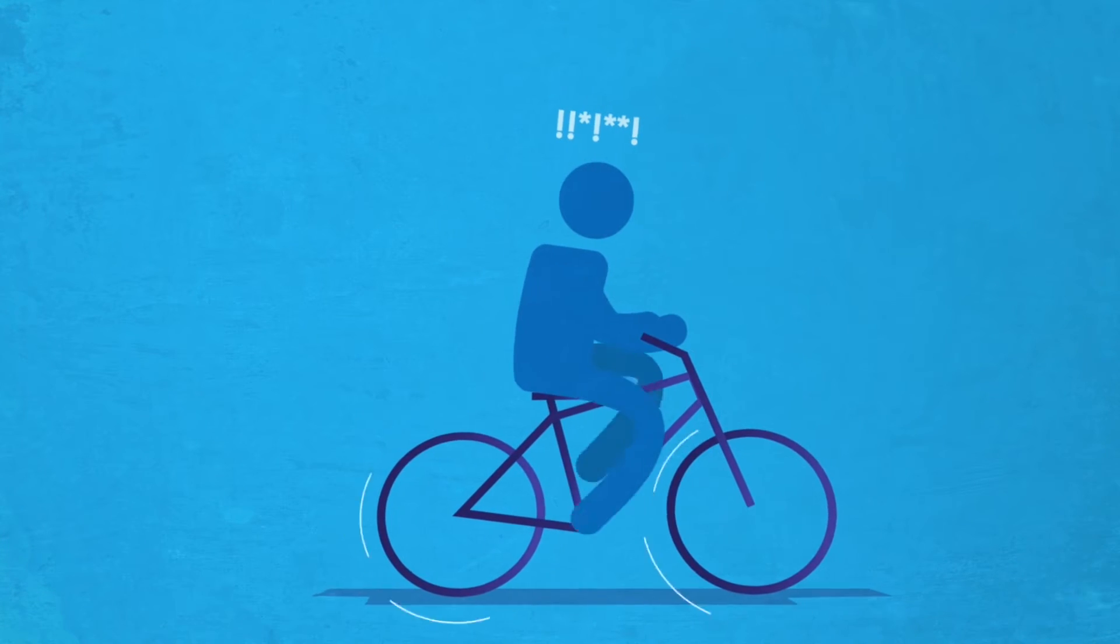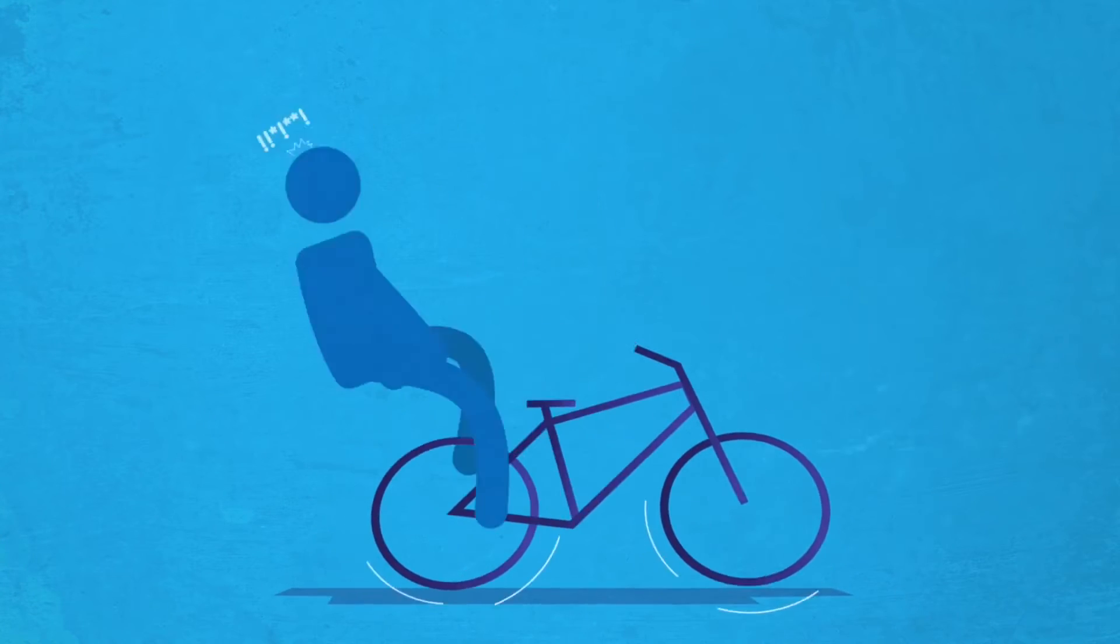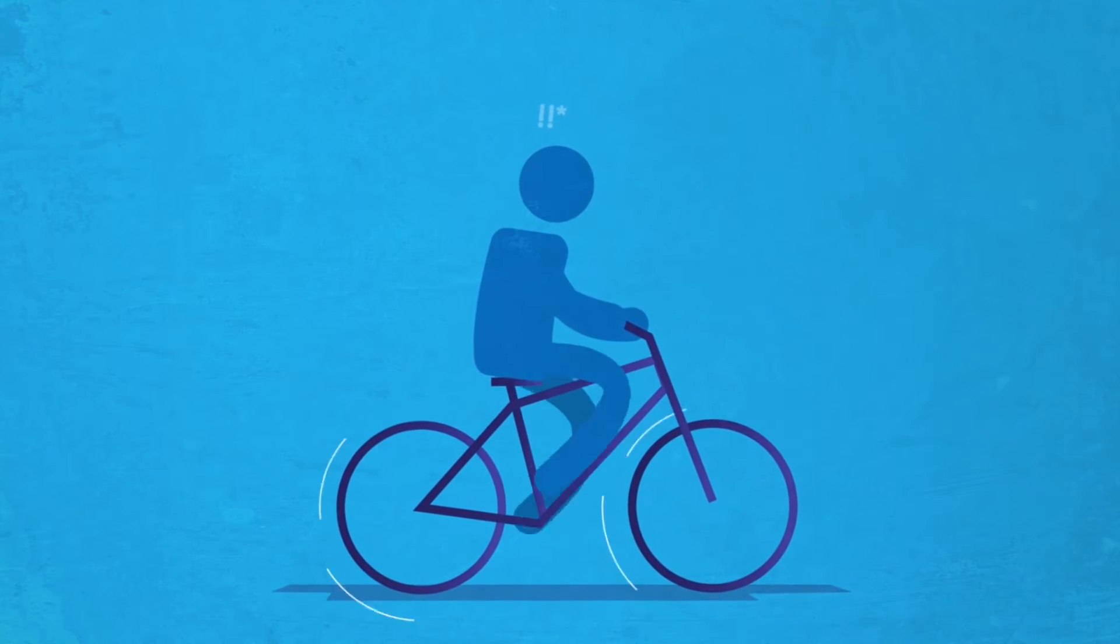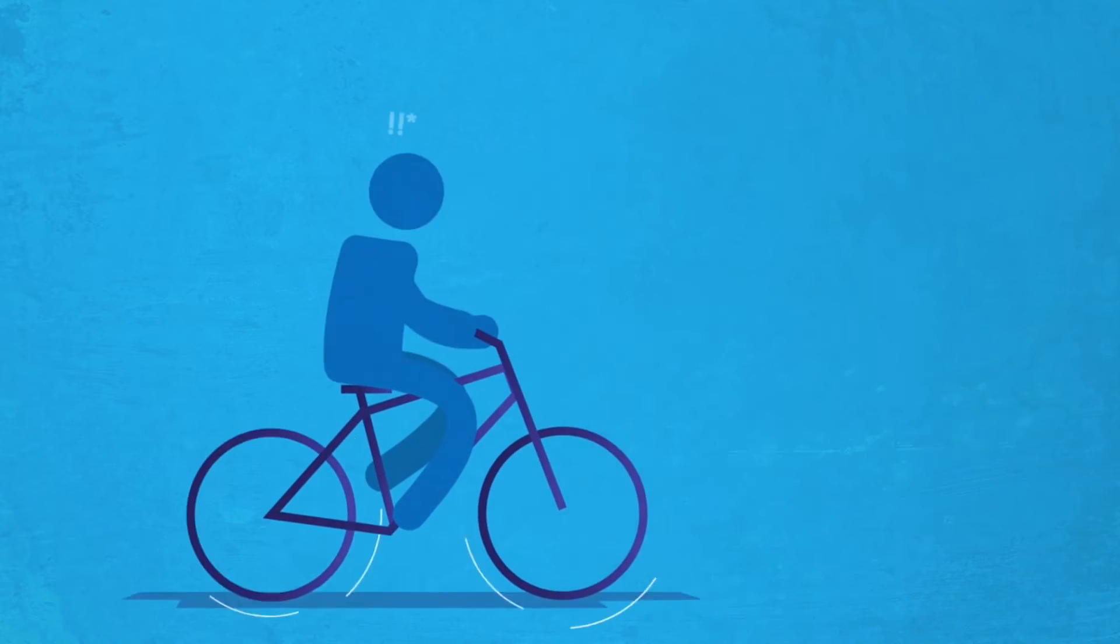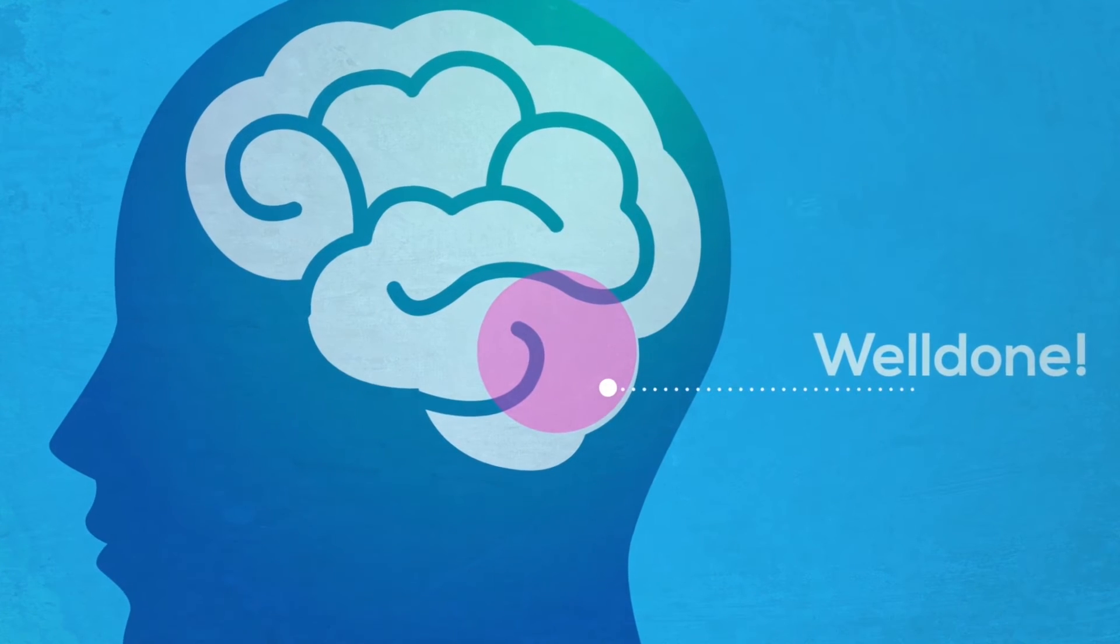When you're thinking about how to ride a bike, you fall off. Only when your brain makes it automatic so you don't have to think about it can you ride effortlessly. That's when the cerebellum does its job. Skills are effortless and we don't have to think about them.